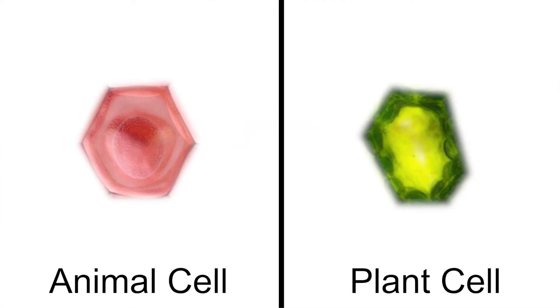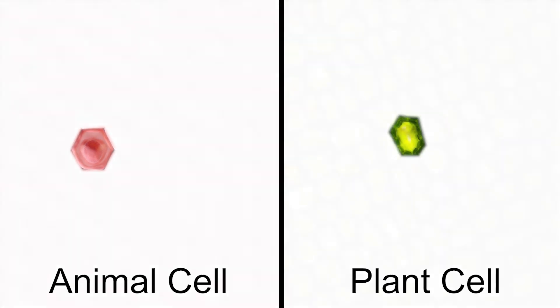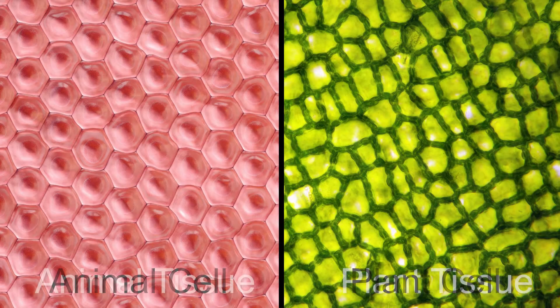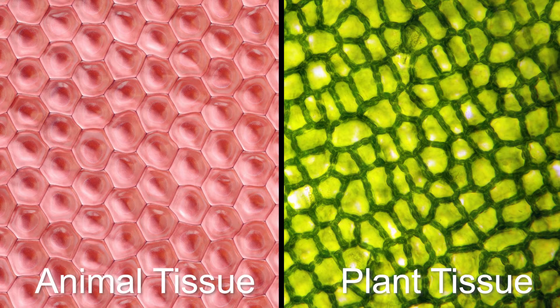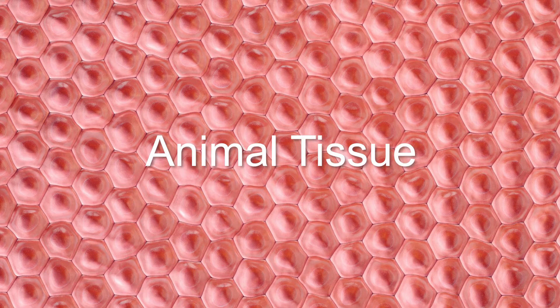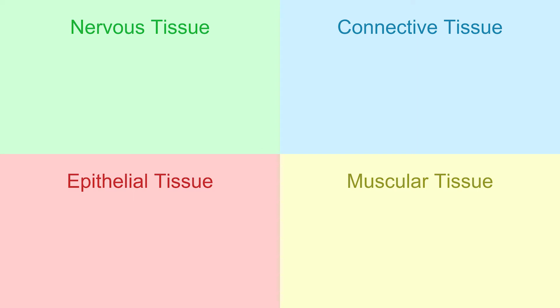In the body, cells that perform the same activity group together to perform certain functions. These cells are called tissues. In the body of animals, there are different types of tissues.